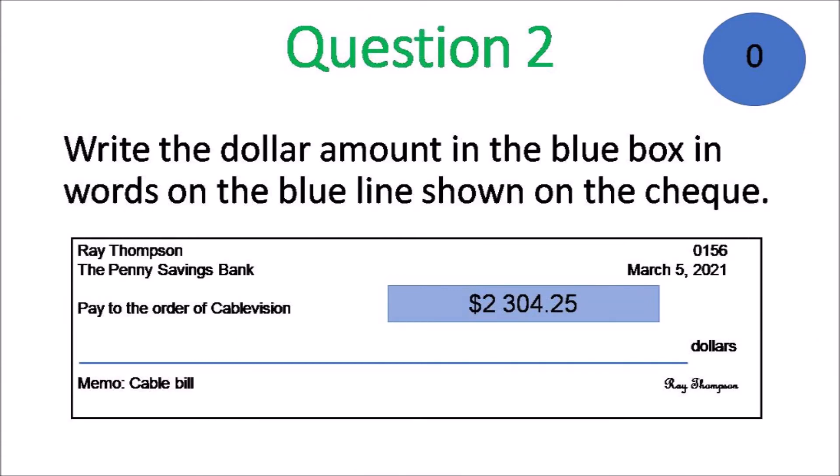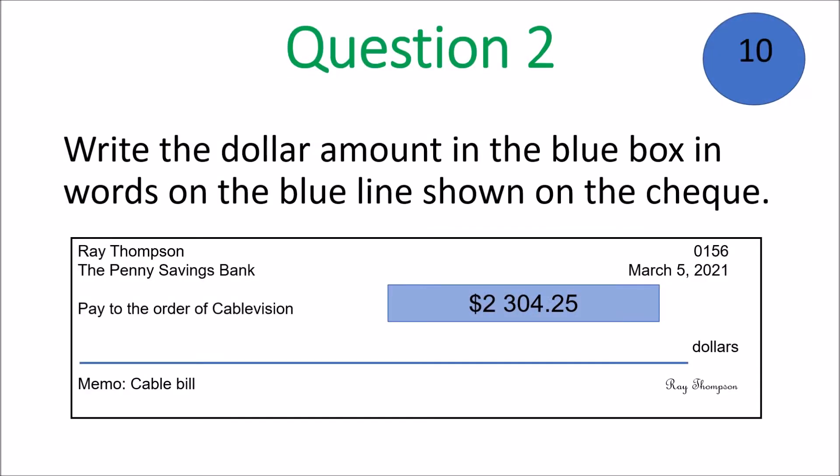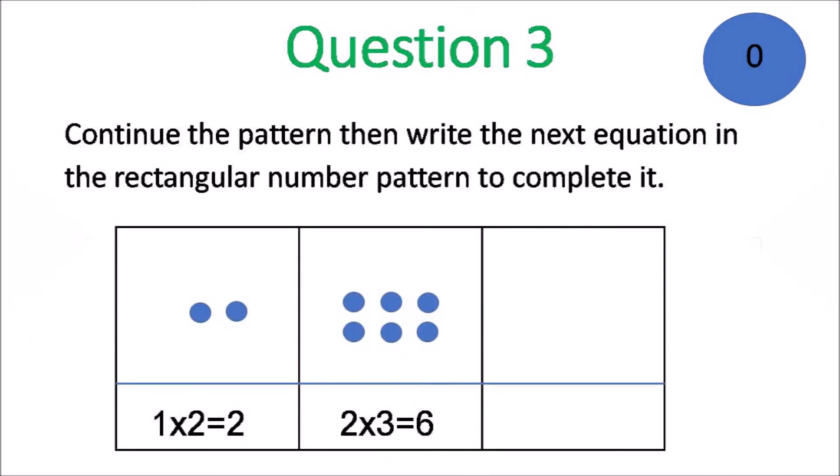You should be wrapping up question 1. Move on to question 2. Write the dollar amount in the blue box in words on the blue line shown on the check. You should know how to fill out a check, Grade 6. The timer is off and running. You need to get cracking on this one because you have to write the words to show the amount shown there in dollars and cents.